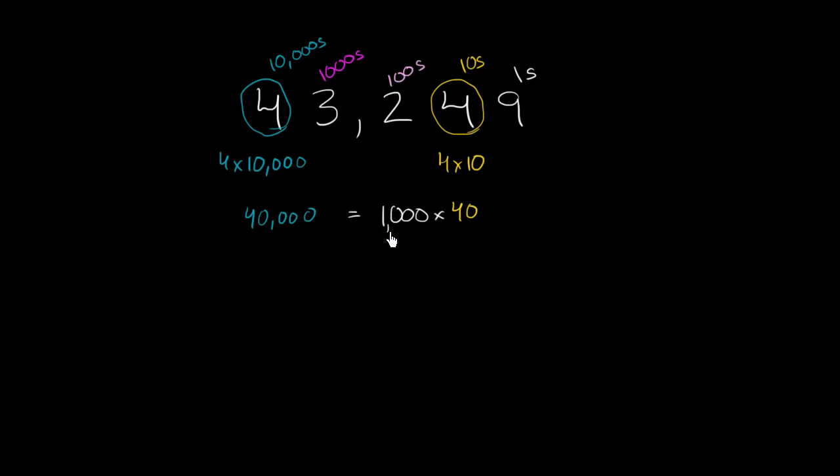So 40,000 is equal to 1,000 times 40, or we could say the 4 on the left here, this blue circled 4, represents 1,000 times the value as the yellow circled 4.